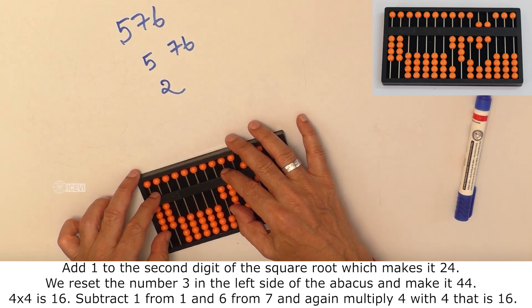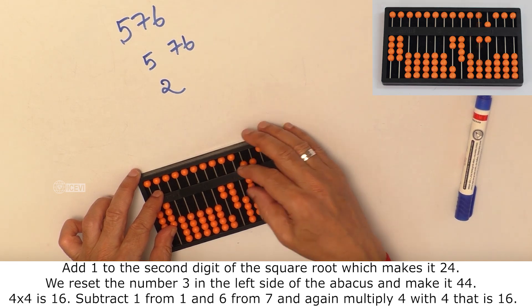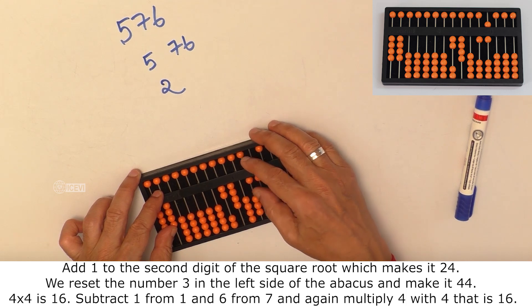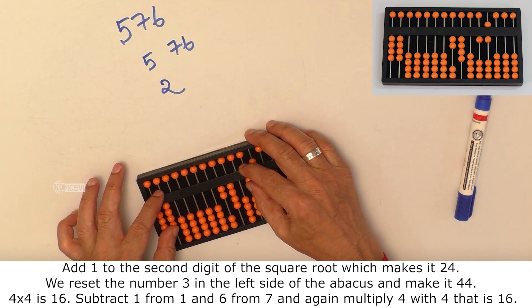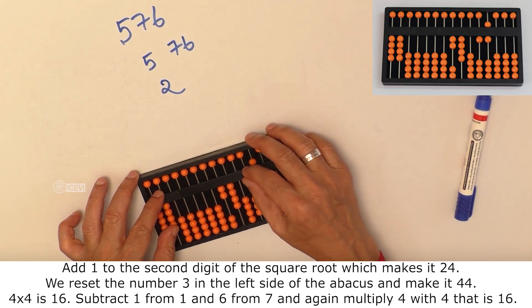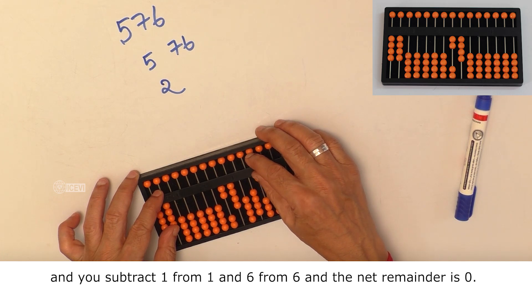That is, 4 into 4, that is 16. So, subtract 1 from 1 and 6 from 7. And, again multiply 4 with 4, that is 16. And, you subtract 1 from 1 and 6 from 6.